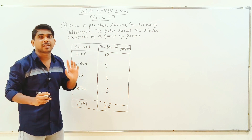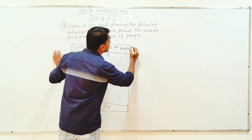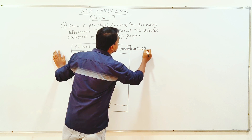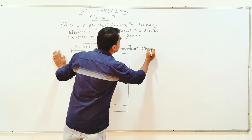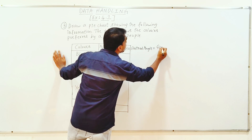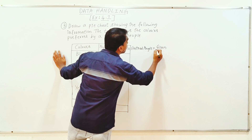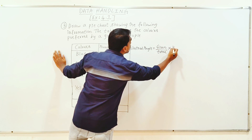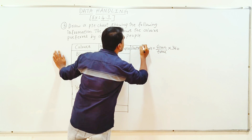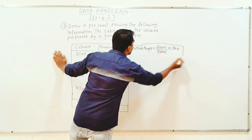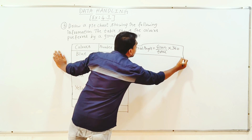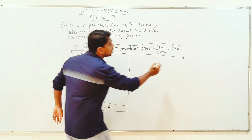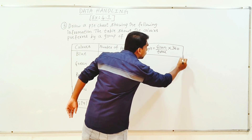First, I am going to write the central angle. I am going to write a formula. The central angle formula is given by: value divided by total, into 360 degrees.